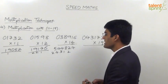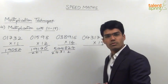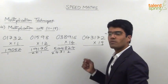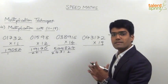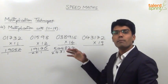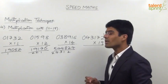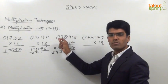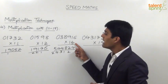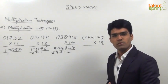So the final answer is 5 lakhs 44824. Therefore, 38916 into 14 equals 544824. It is a very simple procedure and we get the answer much faster compared to the regular way of multiplication. What we do is always multiply each digit of the given number with 4 — the units place of 14 — and add the previous digit to get an effective multiplication with 14.